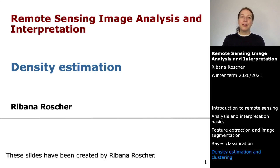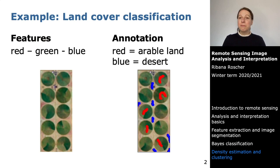Hello and welcome to today's lecture in the course Image Analysis and Interpretation. Today we will talk about density estimation and also about clustering, because these two things are related to each other. I will start with an example — the same example as the last lecture — where our task was to classify each pixel into one of two land cover classes: either arable land or desert, using the features red, green, and blue.